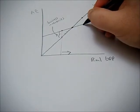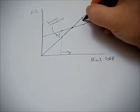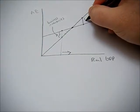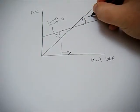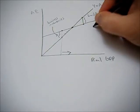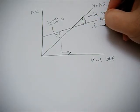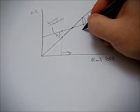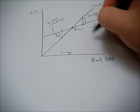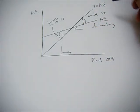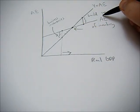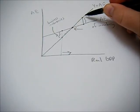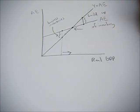Now, if aggregate expenditure is less than GDP, then we actually have a buildup of inventories. Businesses are storing more than they had planned on storing, which means they're going to restrict their production because they have too much inventory and they can't sell it. As they reduce their production, we see real GDP drop. If aggregate expenditure is less than this equilibrium GDP amount, we're going to see real GDP drop.